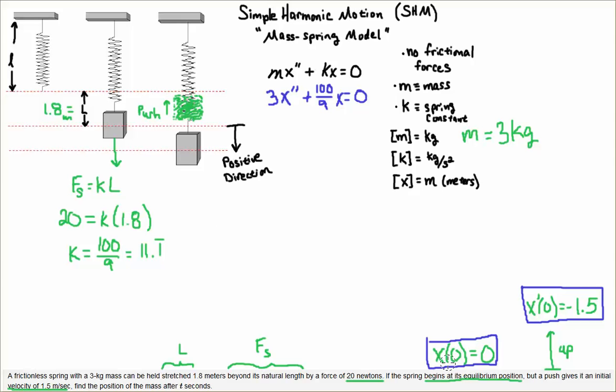I have my initial conditions: starts at equilibrium, initial push of negative 1.5 meters per second upward, mass of 3 kilograms, and spring constant 100 over 9. That's our model of motion.